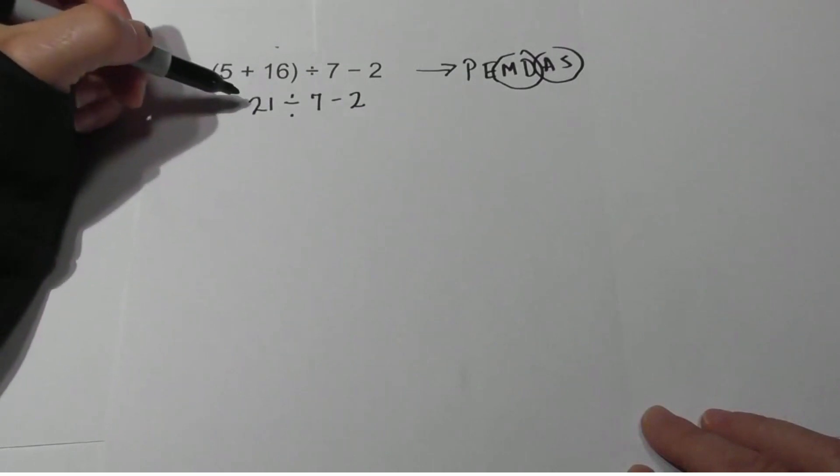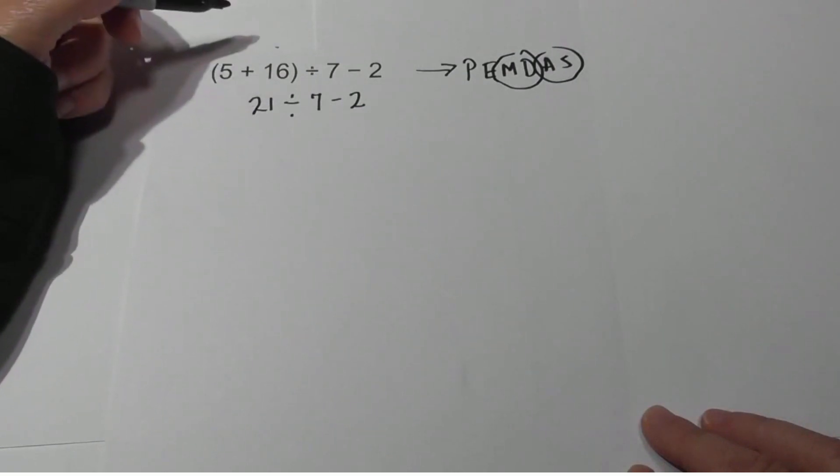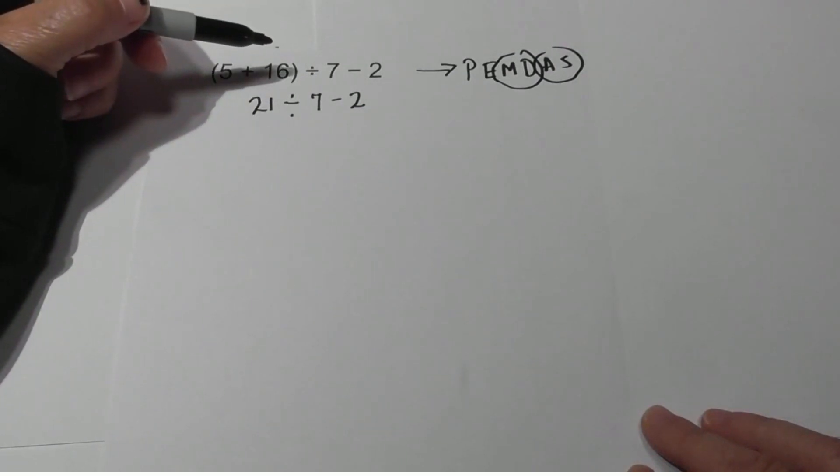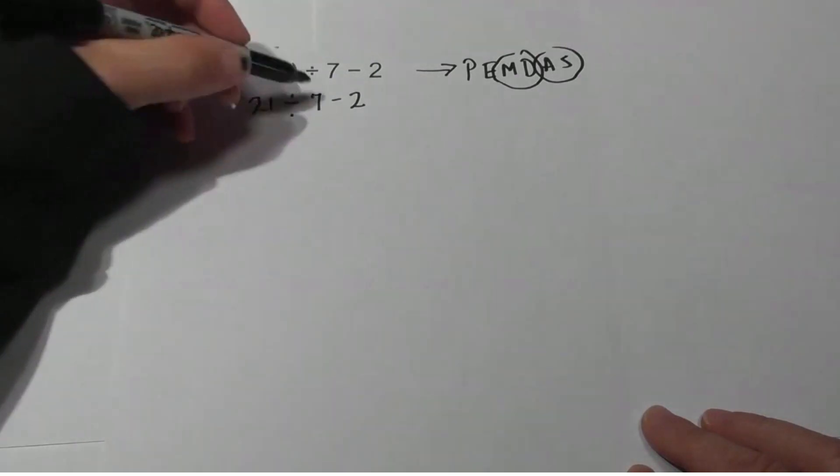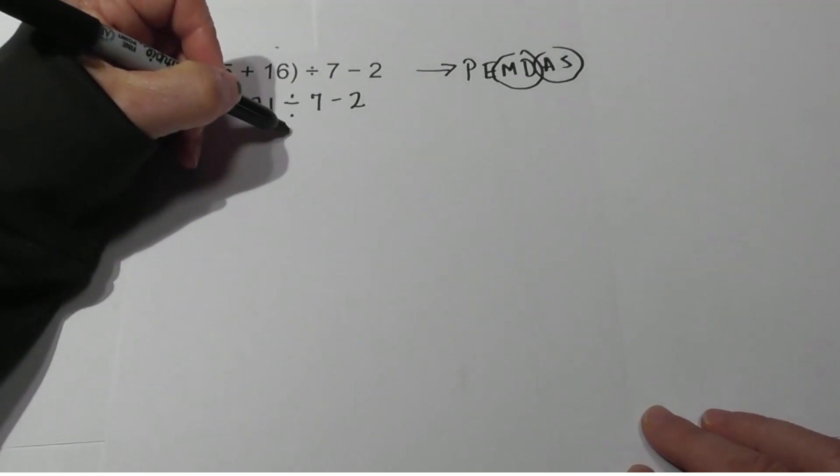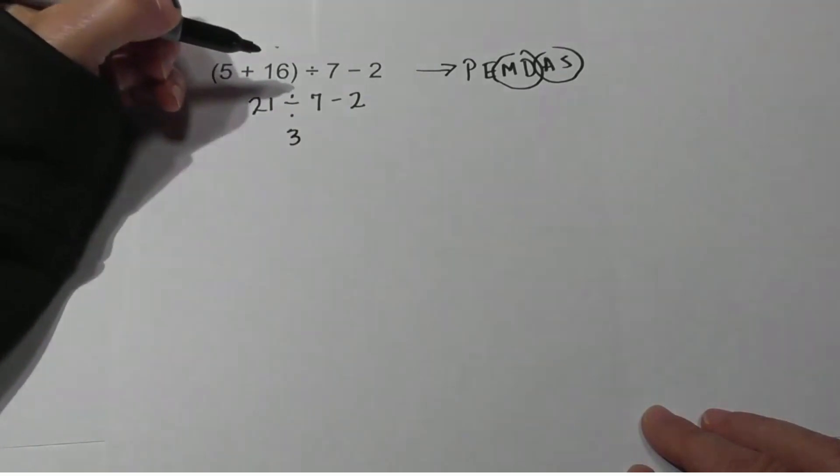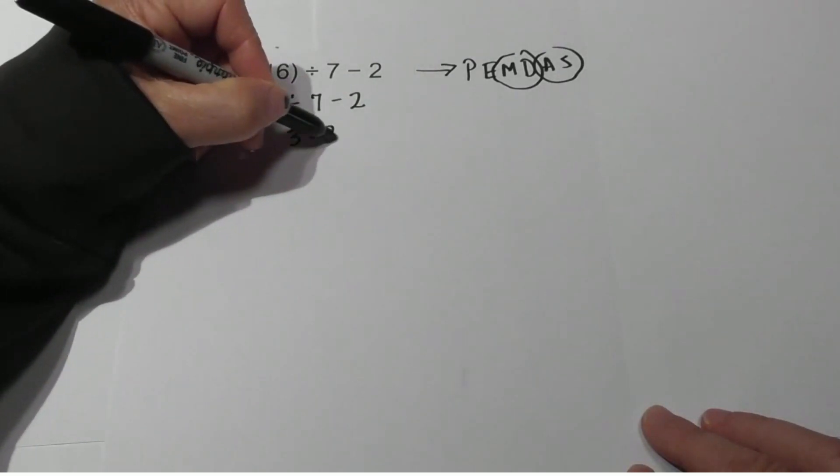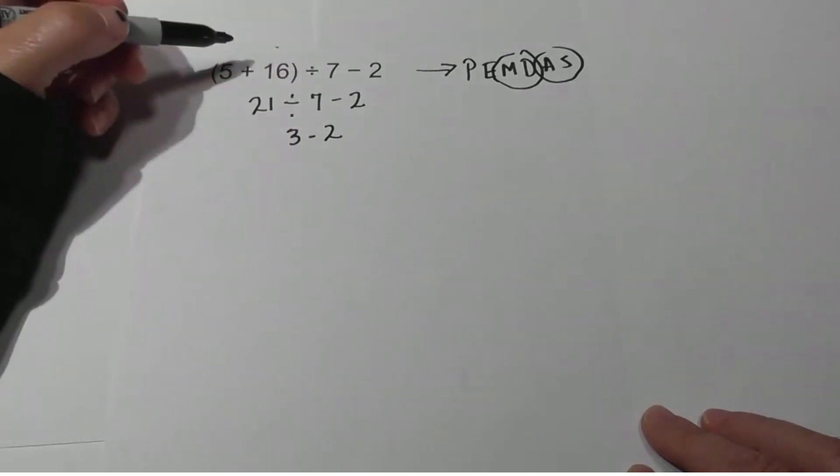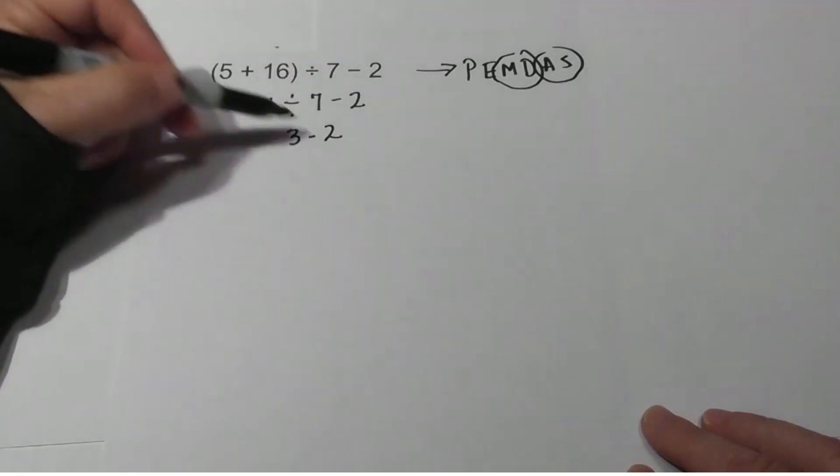Do we have parentheses? No. Do we have exponents? No. Do we have multiplication or division? Yes, we have 21 divided by 7. 21 divided by 7 is 3. Bring down the 2. Now working from left to right.